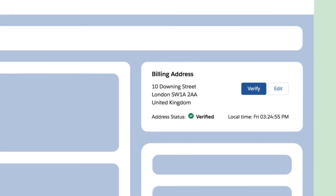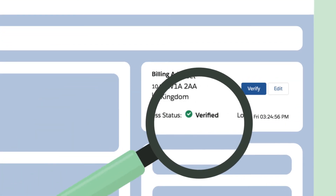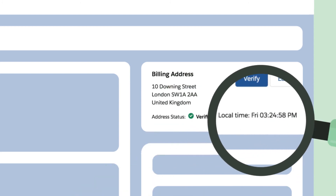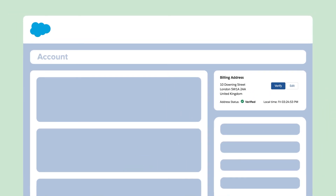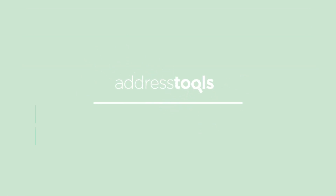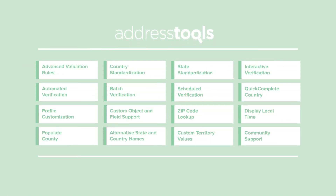We can see this address has been verified and the local time is 3:24 in London. Address Tools also offers features such as county population, automated address verification, and many more.